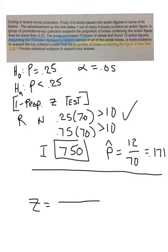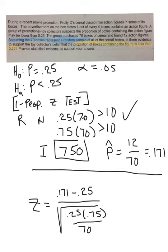So here we go. We're going to do 0.17171 minus 0.25, and we need the standard deviation. We use the population proportion: 0.25 times 0.75 divided by how many we had.